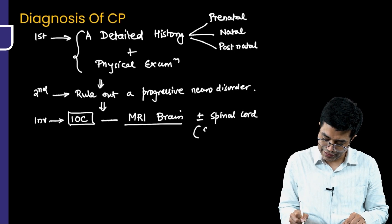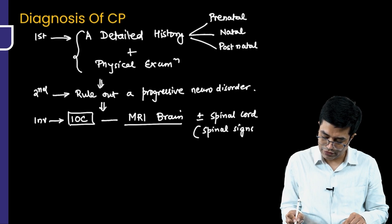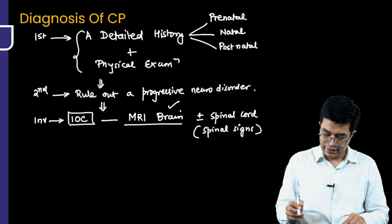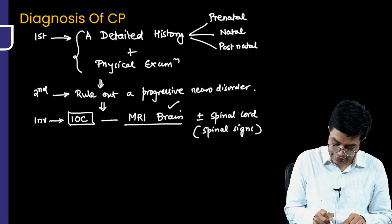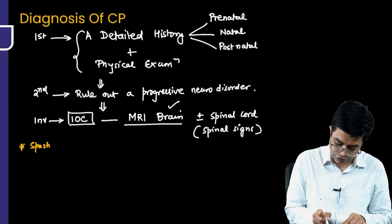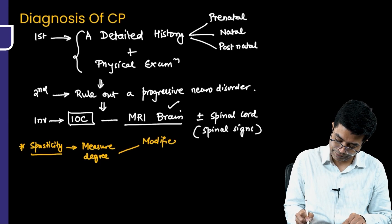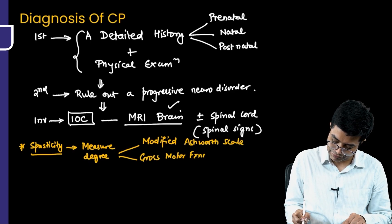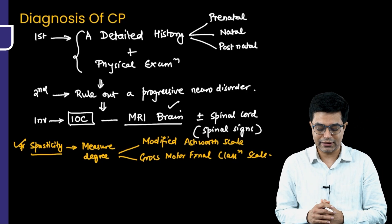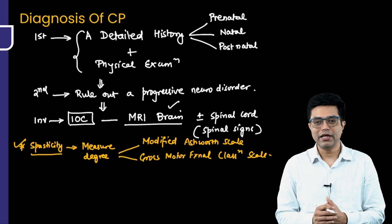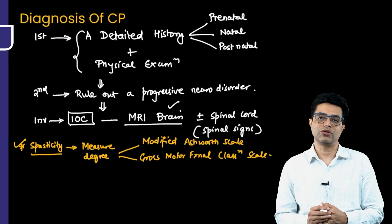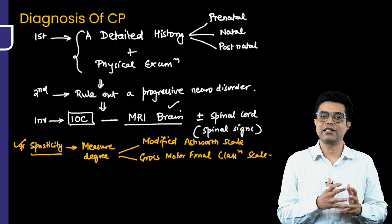The investigation of choice is MRI brain with or without MRI of the spinal cord. If the patient has any spinal signs, you will go for MRI brain with spinal cord; otherwise MRI brain alone is sufficient. When examining these patients, if spasticity is present, you will measure the degree of spasticity using either the modified Ashworth scale or the Gross Motor Function Classification System (GMFCS). This should be part of the initial assessment and management in a cerebral palsy child.